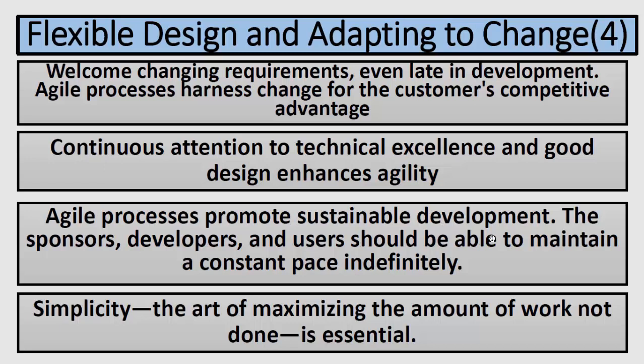Agile processes promote sustainable development — the sponsors, developers, and users should be able to maintain a constant pace indefinitely. In agile, we want everyone on the team to improve at the same pace. If someone falls behind and can't keep pace, we should help and pull them up to the same development level as the rest of the team.